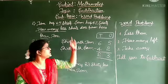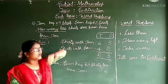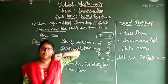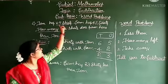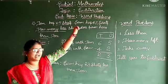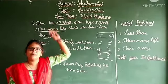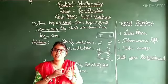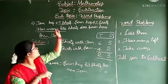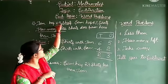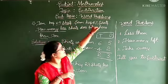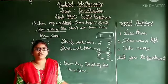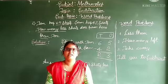Because Tom has 65 shirts and Sam has 42 shirts, Tom has the higher number. Therefore our answer is Sam has 23 shirts less than Tom. This is all about our second example.